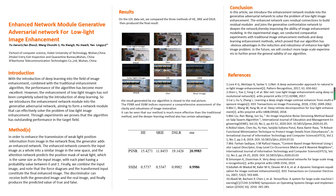We use the PSNR and SNM indicators to represent a comprehensive assessment of the clarity and robustness of image restoration. From this table it can be seen that our method is much more effective than the traditional methods — HE and SRE — which is obvious. Compared to the deep learning method DSLR, we also have a clear advantage.